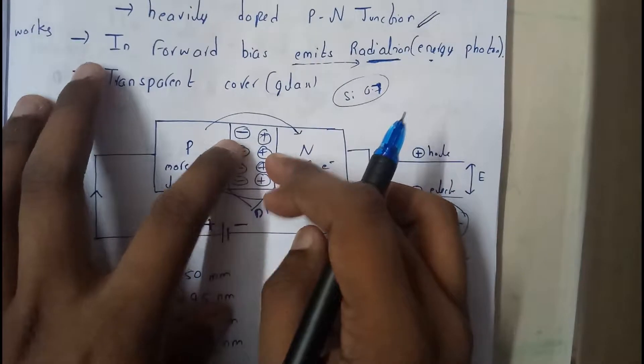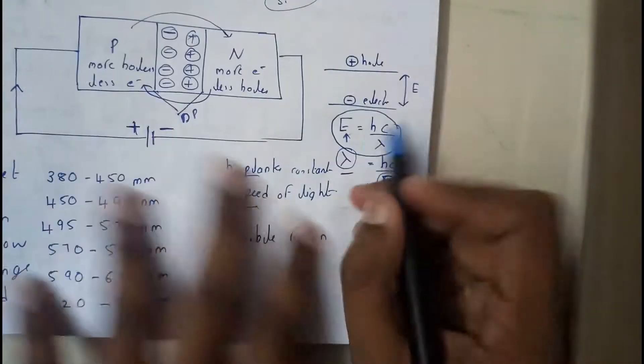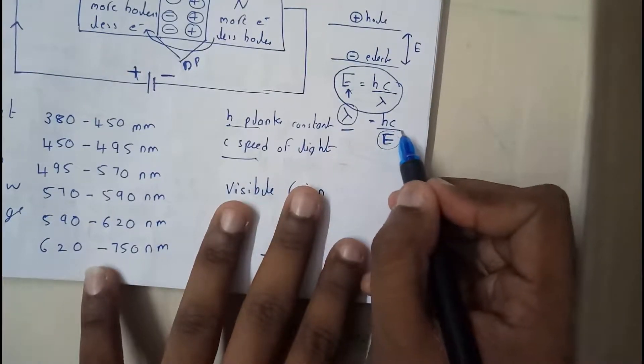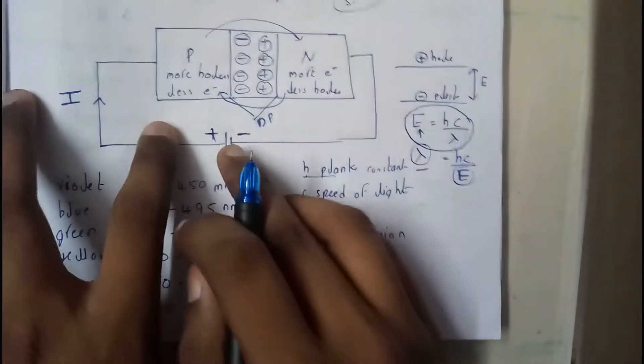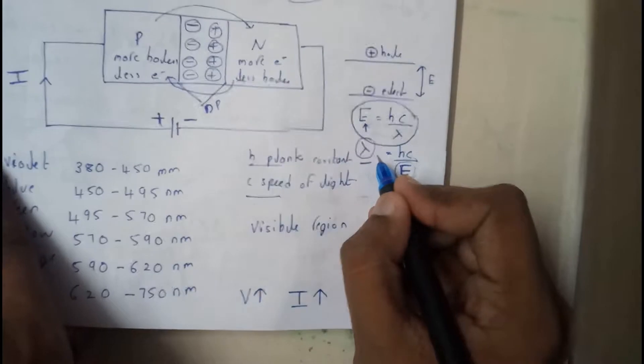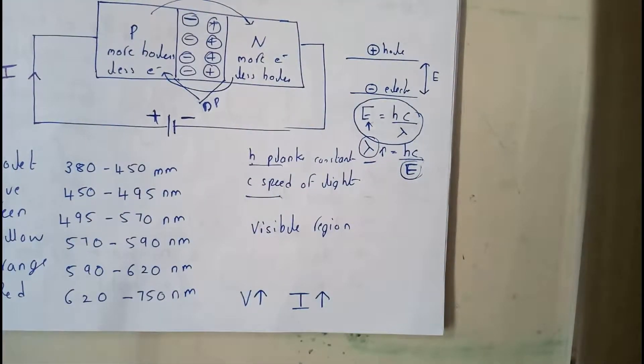These two and these two will start recombining and that forms an energy. So that energy is equal to hc by lambda, so lambda is equal to hc by E. With change in E as you keep on increasing the forward bias, you are going to get different wavelengths. Basically wavelengths determine the color.